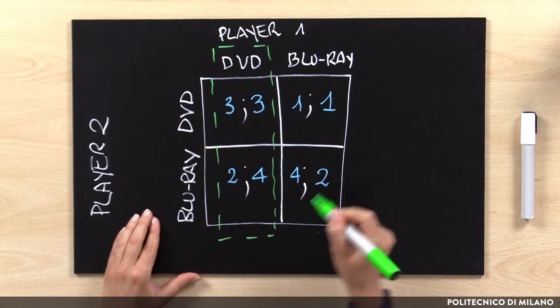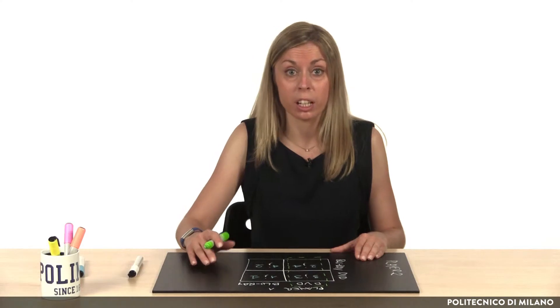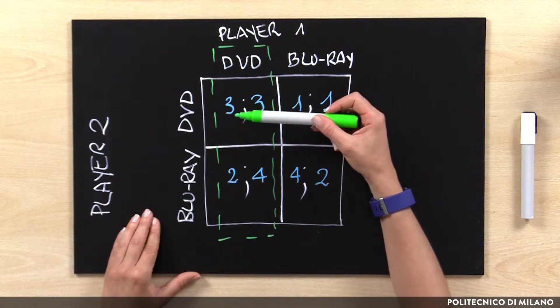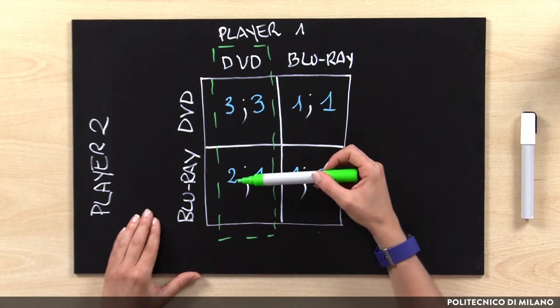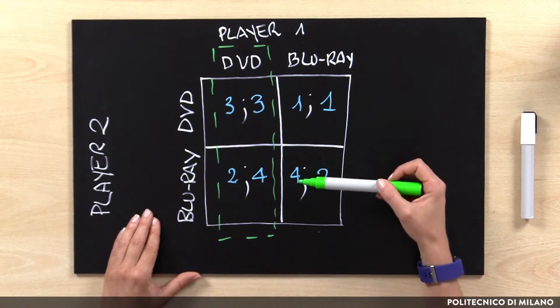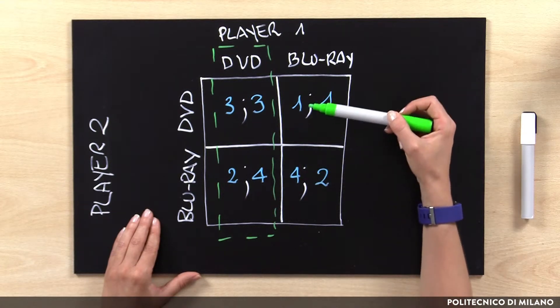On the contrary, we could not find a dominant option for Player 2. If Player 1 selects DVD, Player 2 prefers DVD with a payoff of 3 rather than 2. But if Player 1 selects Blu-ray, Player 2 prefers Blu-ray with a payoff of 4 rather than 1. It is very useful to identify a dominant option, because in this situation it is possible to take rational decisions, reducing uncertainty entirely.